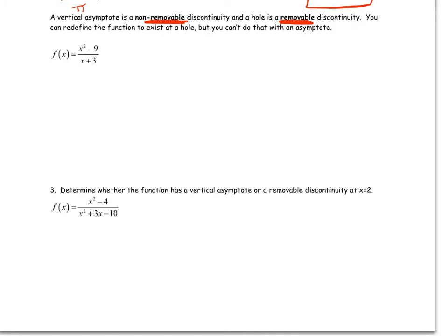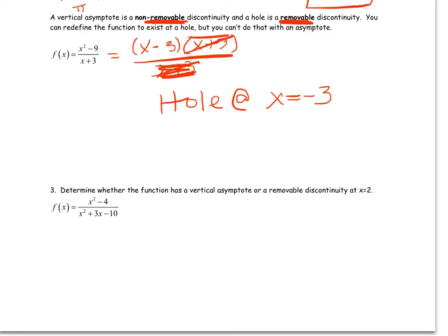Limit exists at a hole, but it does not exist at an asymptote. So if we factor this new function, difference of squares makes x minus 3, x plus 3 over x plus 3, we get the x plus 3 part cancels. So that's a hole. That's a removable discontinuity at x equals negative 3. Well, what about vertical asymptotes? There's nothing left in the denominator. So there's actually no vertical asymptotes in this graph.